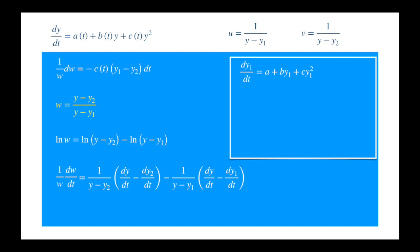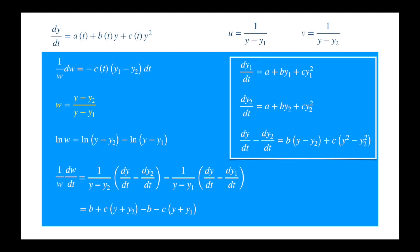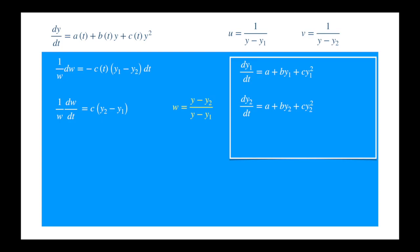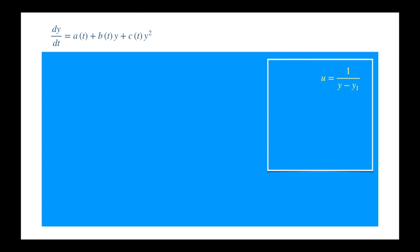We can apply the same logic to the right-hand side. Now we know that y satisfies the Riccati equation because it is a particular solution, and so does y2. It is easy to calculate the difference of the derivatives of y and y2. The a's cancel by the way, because they appear in both equations. Dividing this expression by y minus y2 gives us the first term, and we will get a similar expression for the second term. Now the b's and y's cancel, and we get the separable equation that we encountered before, so the rest of the story is the same and we can skip the next steps.